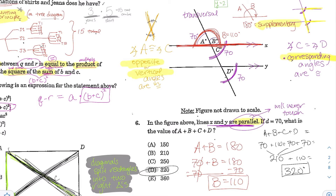Another way: knowing A and B are supplementary (add to 180) and angle C equals 70, you could just do 70 plus 70 plus 180 to get choice D. This is the classic setup — parallel lines with a transversal give many congruent angles, so be on the lookout for these.